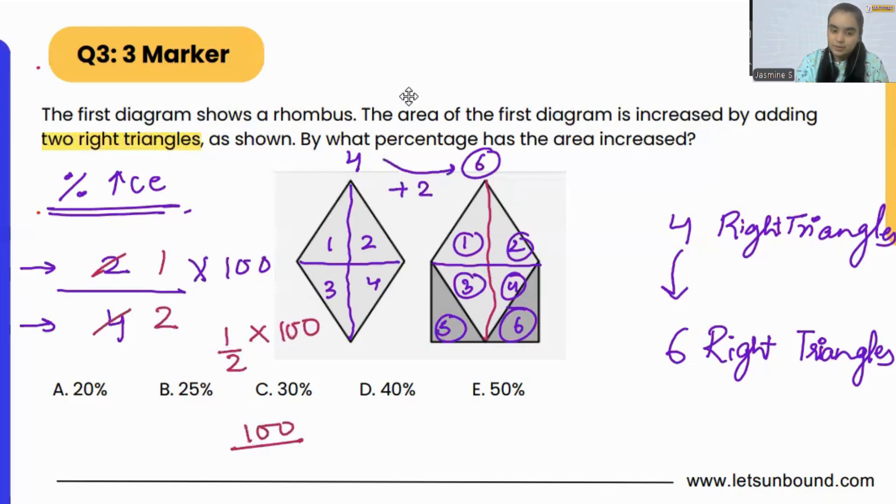So 50 percent. This was method 2 of doing it. First method was to directly see, okay, these two triangles are basically this part - 50 percent of the rhombus. And that's how we figured out, okay, 50 percent of the area has been increased.